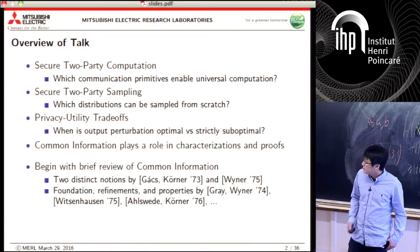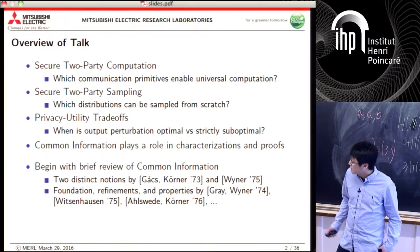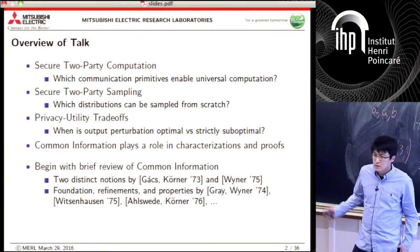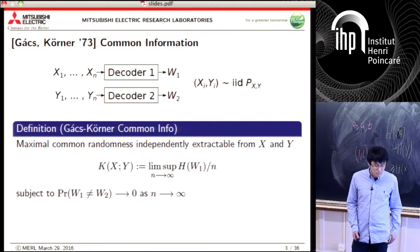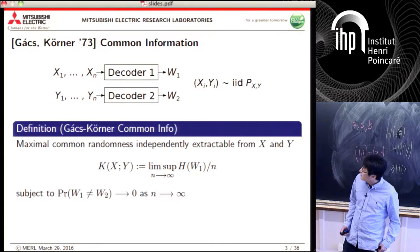To begin, I'll give a brief review of common information, which was introduced in two different forms by Gács-Körner and by Wyner, and there was a lot of attention in the 70s on deriving their results and related properties.